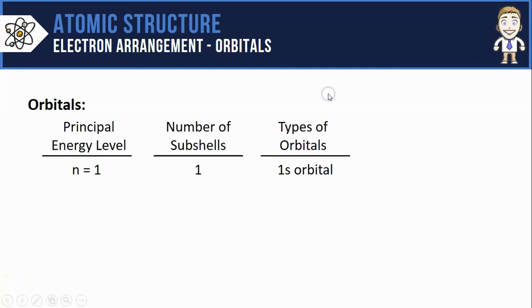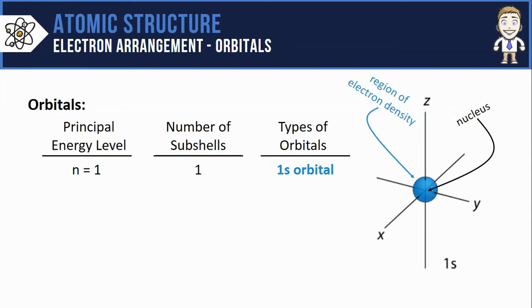So what exactly is a 1s orbital? Well here's a diagram of what it might look like if you could see it. The X, Y, Z axis converge at a center point where you can imagine the nucleus might be. The surrounding blue sphere is the orbital itself. Technically this is called a region of high electron density. What does that mean? All that means is that if you're an electron and you're in the 1s orbital you are most likely to be found somewhere within that sphere surrounding the nucleus.